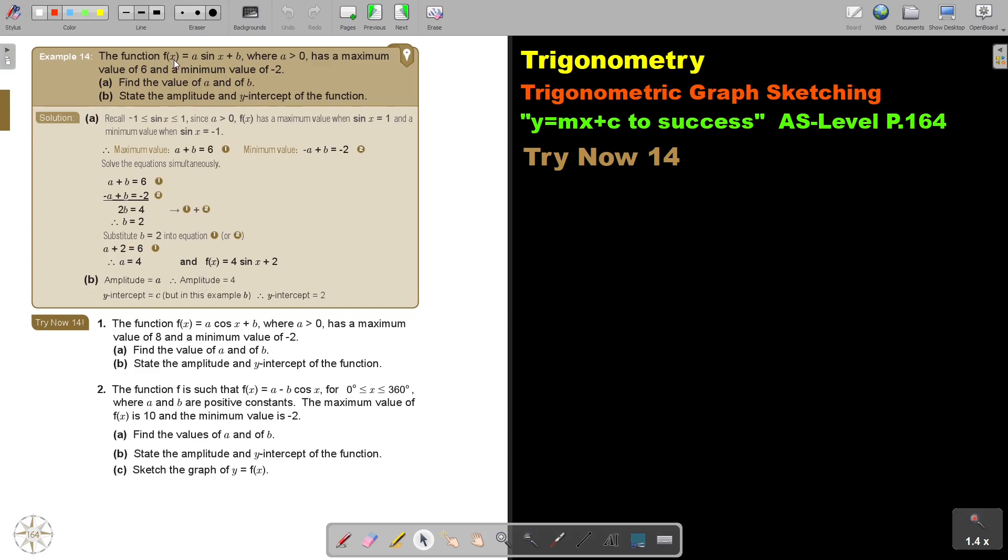The function fx equals a sin x plus b where a is bigger than zero has a maximum value of six. Maybe I can just underline that. Has a maximum value of six and a minimum value of negative two. Find the value of a and b.